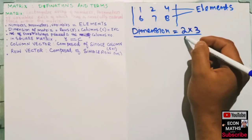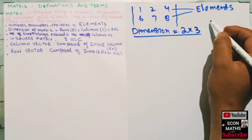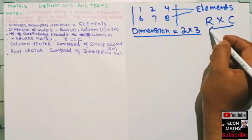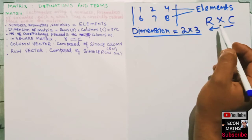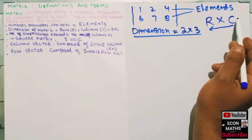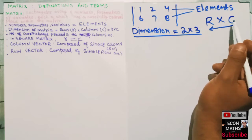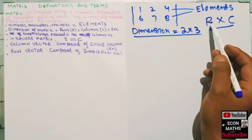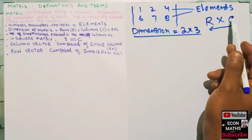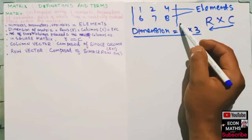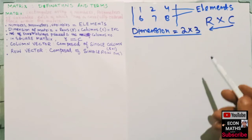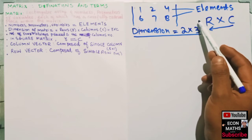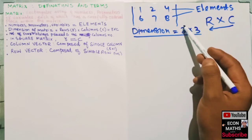The row number always precedes the column number. We write it as R cross C — first we write the rows, then the columns. We cannot interchange their positions. So here it is two cross three: the first number, two, is the number of rows, and the second number, three, is the number of columns.